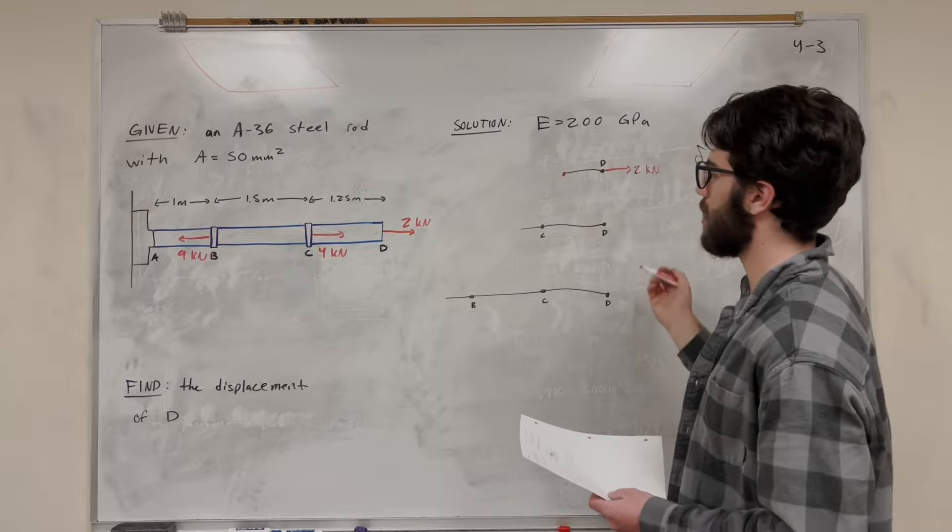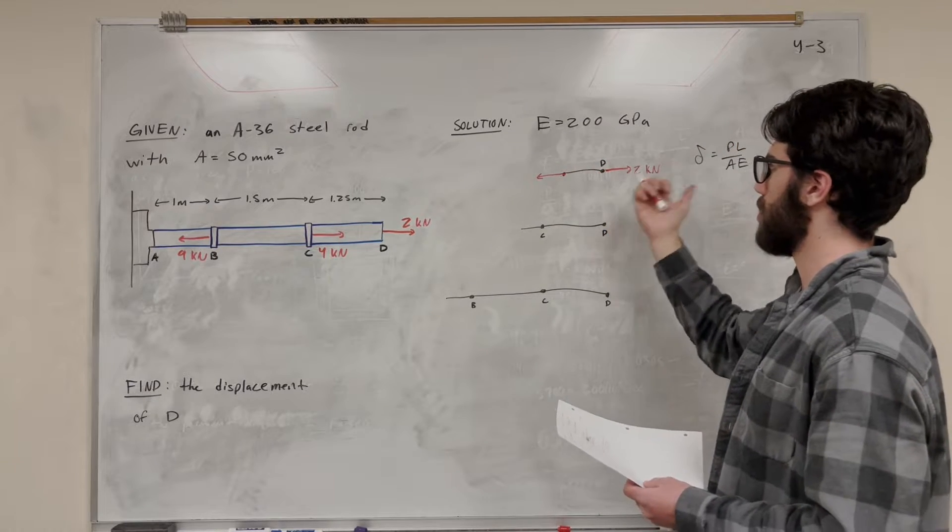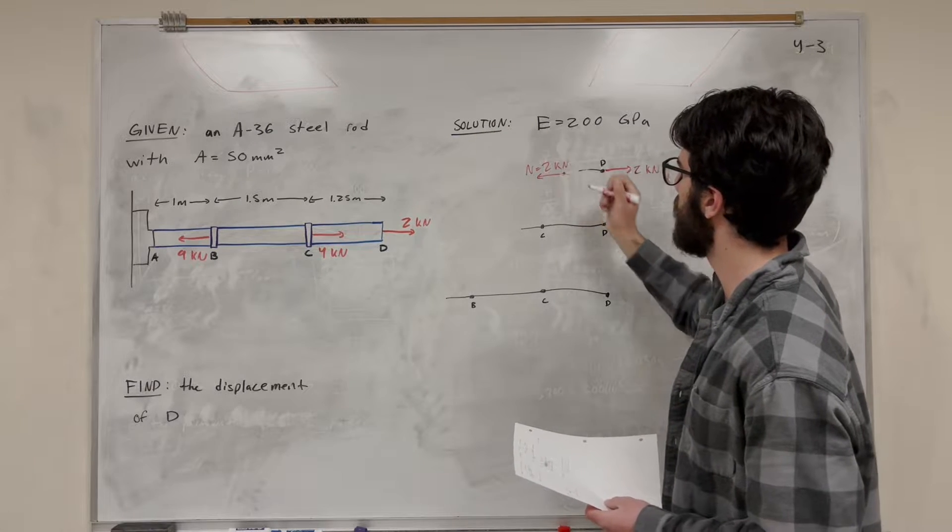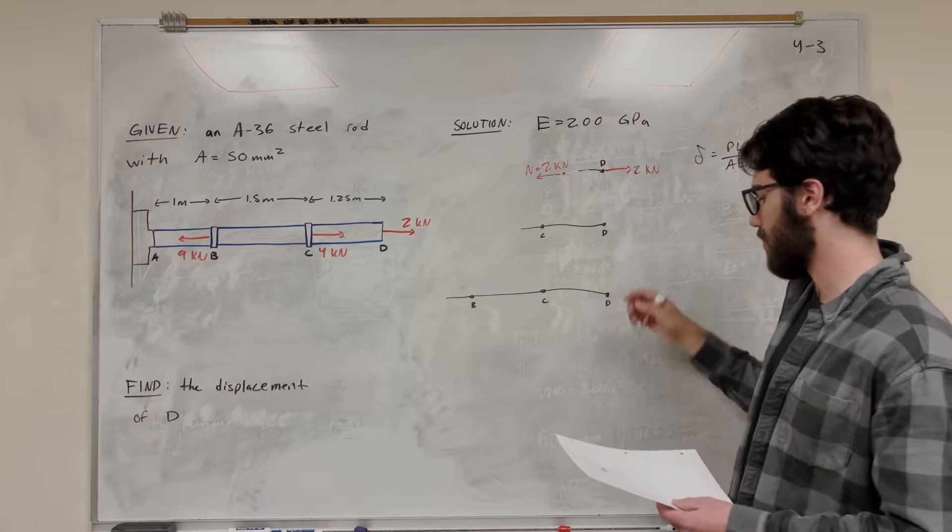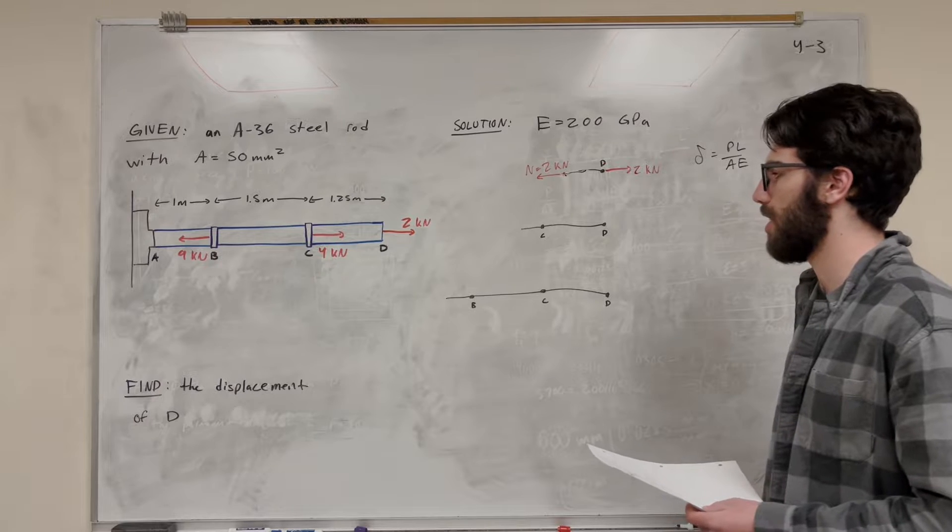So then, at this point here, there's going to be a normal force. That normal force has to be equal to the forces pushing to the right. So this is going to be normal equals 2 kilonewtons. So that's going to be the force that we use for section DC, because we know that the normal force at any point in that section is equal to 2 kilonewtons.